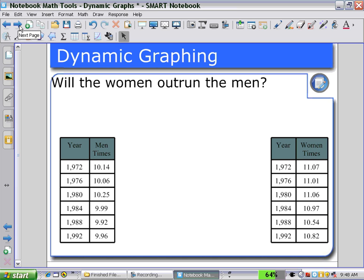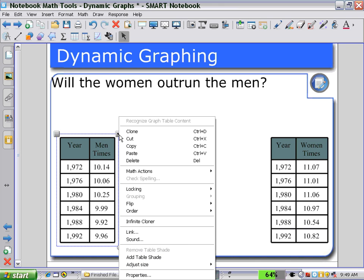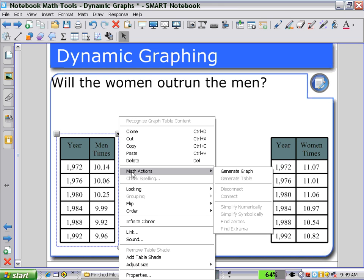Here's an example where this will be useful. Here we have two tables and a problem about the running times for men's and women's races. So, we've seen this problem before. Highlighting the table, we can now generate a graph using math actions and generate graph.